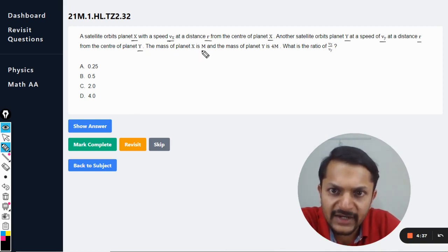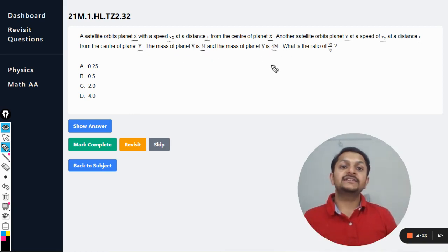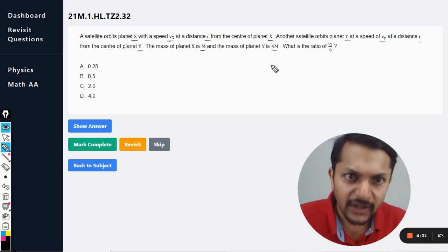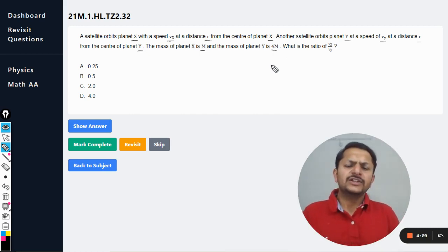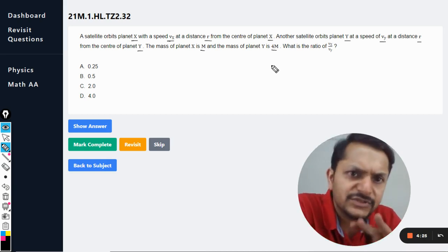The mass of planet X is M and the mass of planet Y is 4M. What is the ratio of the orbital velocities? Okay, fine. So this seems to be a bit simple question.